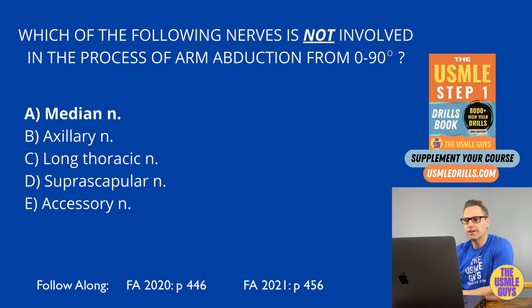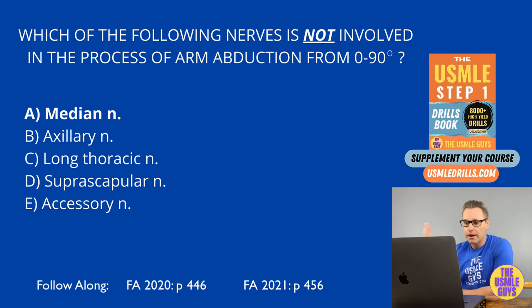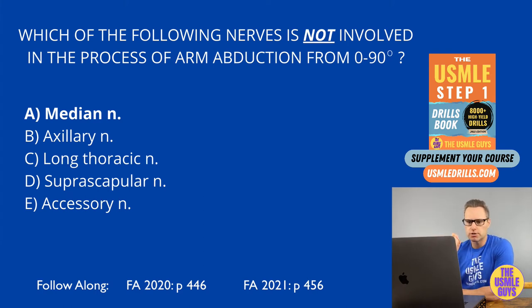The correct answer here is A, the median nerve. Let's talk about arm abduction — this is important to know because it can be a really simple answer on exam day. You need to be able to grab those easy points wherever and whenever you can.